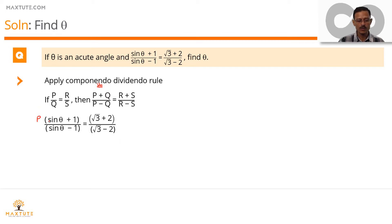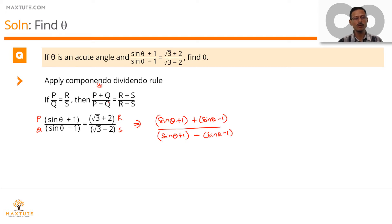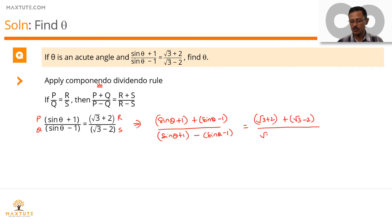Here, p = sin θ + 1, q = sin θ − 1, r = √3 + 2, and s = √3 − 2. Applying the rule, the left-hand side becomes (sin θ + 1 + sin θ − 1) divided by (sin θ + 1 − (sin θ − 1)), and the right-hand side becomes (√3 + 2 + √3 − 2) divided by (√3 + 2 − (√3 − 2)).